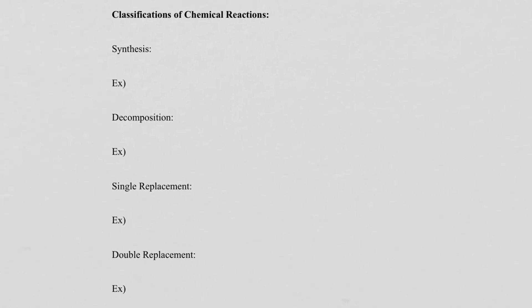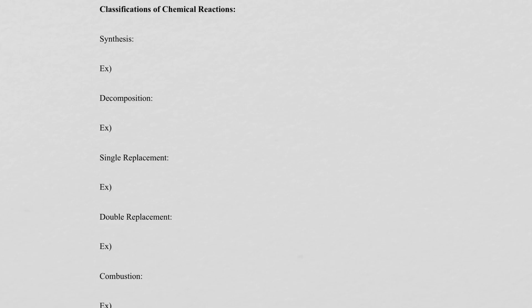The first type of reaction we're going to talk about is synthesis. Synthesis reactions take two things and make them one thing — or more than two things and make them one thing. A really good format way to write this is just A plus B yields AB.